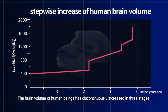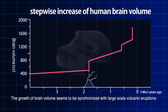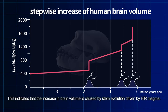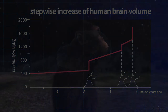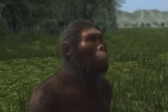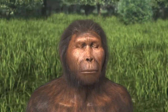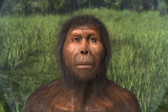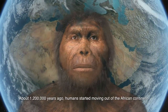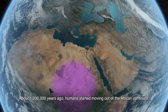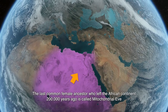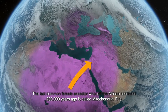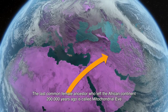The brain volume of human beings has discontinuously increased in three stages. The growth of brain volume seems to be synchronized with large-scale volcanic eruptions, indicating that the increase in brain volume is caused by stem evolution driven by high-radiation magma. About 1,200,000 years ago, humans started moving out of the African continent. The last common female ancestor who left the African continent 200,000 years ago is called Mitochondrial Eve.